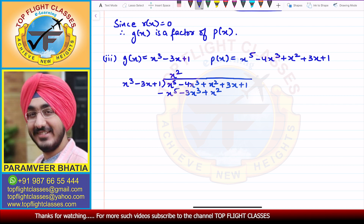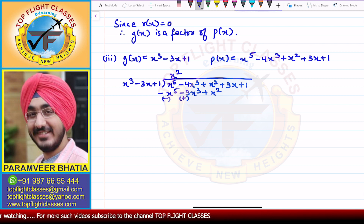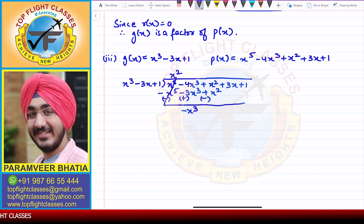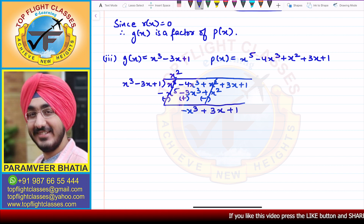On subtraction, the signs change: x⁵ − x⁵ cancels, −4x³ + 3x³ = −x³, x² − x² cancels, and 3x + 1 come down as is.